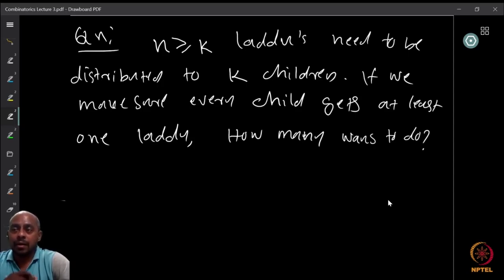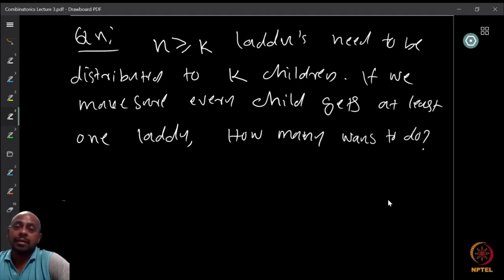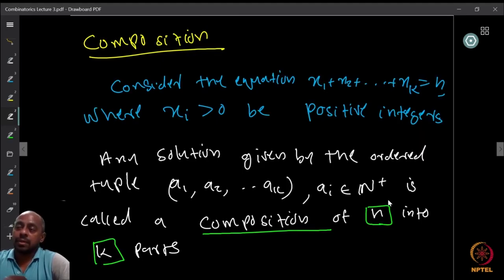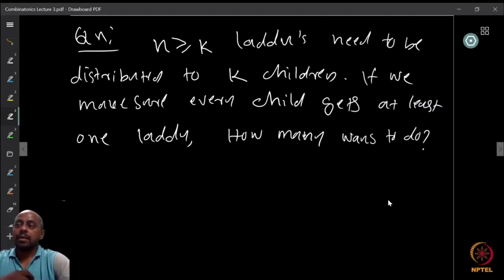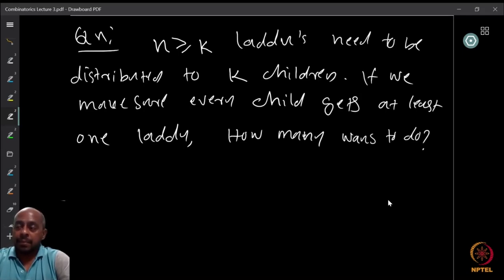One can immediately see that this question is precisely the question of compositions. We can assume the number of laddus received by each of the k children to be the values taken by x_i. They sum to n, and the number of ways to do the distribution is precisely the number of solutions — the composition of n into k parts — since x_i must be strictly positive (everybody gets at least one).